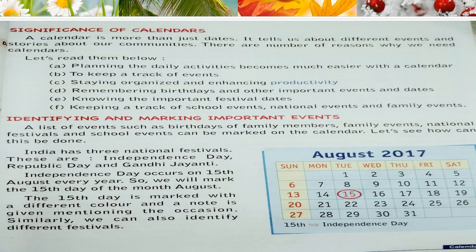Identifying and marking important events. Now we will learn how we can identify or mark the important events in our calendar. A list of events such as birthdays of family members, family events, national festivals and school events can be marked on the calendar. India has three national festivals: Independence Day, Republic Day and Gandhi Jayanti.